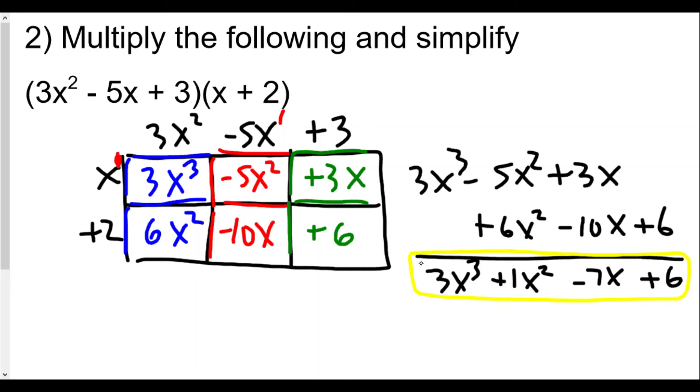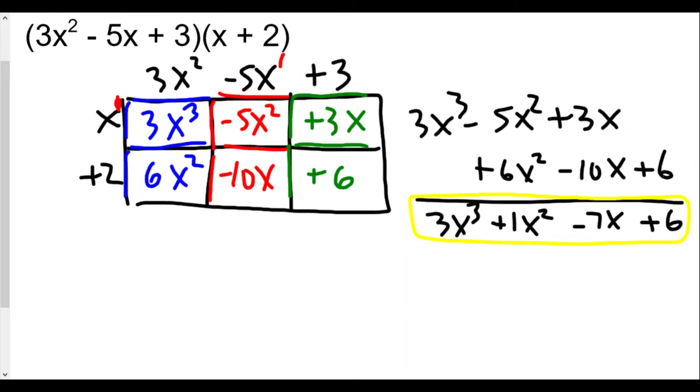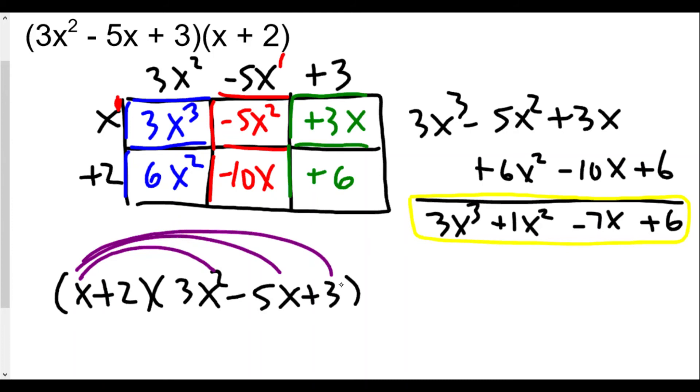Now some of you are saying, 'But Mr., I'm just not crazy about the box method, I'll use distributive method.' Totally okay. In this case, I would rewrite (x + 2) times (3x² - 5x + 3) because I'm going to do distributive property. I'm going to draw rainbows, the first set of rainbows here to remind me that when I'm multiplying, x times 3x² is 3x³, x times -5x is -5x², and x times 3 is +3x.